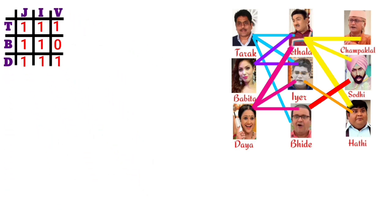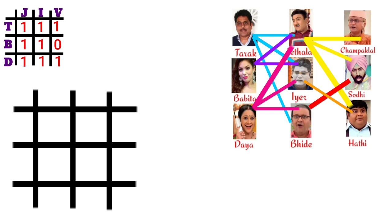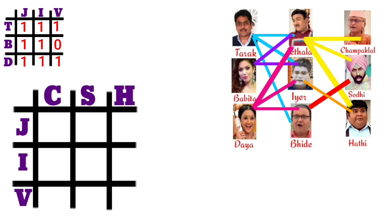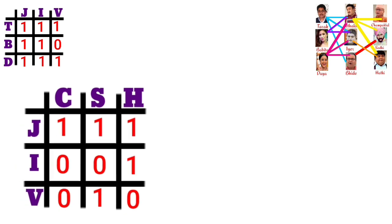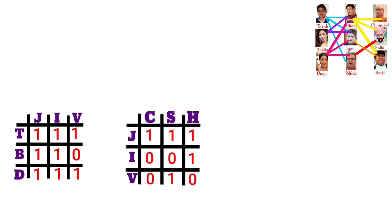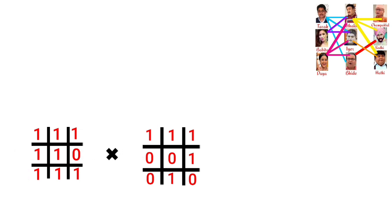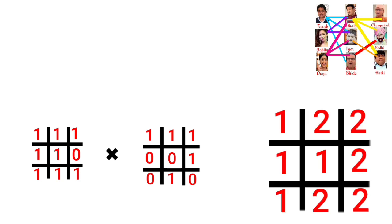Now we construct the second matrix with rows J, I, V and columns C, S, H — for Champak, Sodhi, and Hathi. We fill it in exactly the same way using 1s and 0s based on the friendships. Once you have both matrices, you simply multiply them using standard matrix multiplication and you will immediately get the result matrix.